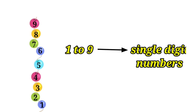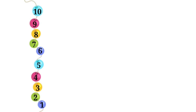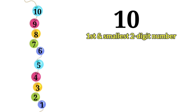Numbers one to nine are single digit numbers. They will always be at ones place. Now children, if we add one more bead in the tray, then we have 10 beads. Number 10 is the first and the smallest two digit number.